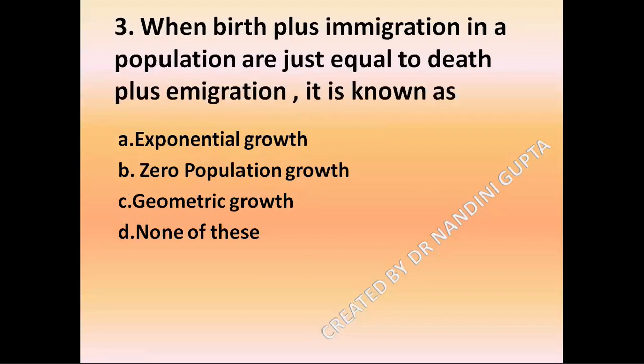When birth plus immigration in a population are just equal to death plus immigration, it is known as — option A, exponential growth; option B, zero population growth; option C, geometric growth; option D, none of these.